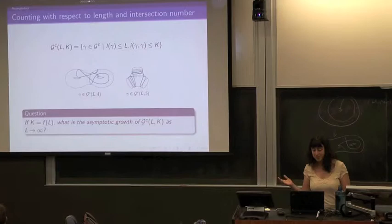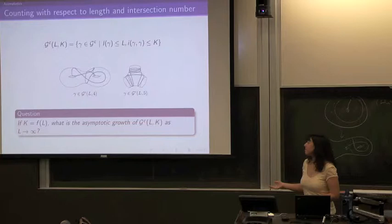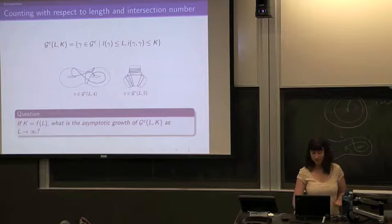The ideal question you might want to answer is: suppose we set some dependence between intersection number and length — what is the asymptotic growth of |GC(L,K)| as L goes to infinity? For maximum intersection number, we have that. Let's see what's known about this question.